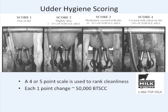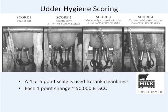Teat cleanliness scoring is directly related to mastitis risk — as the amount of dirt and manure on the teat increases, somatic cell count and bacterial count go up. This is a clear relationship: keeping cows clean pays off in lower somatic cell counts.